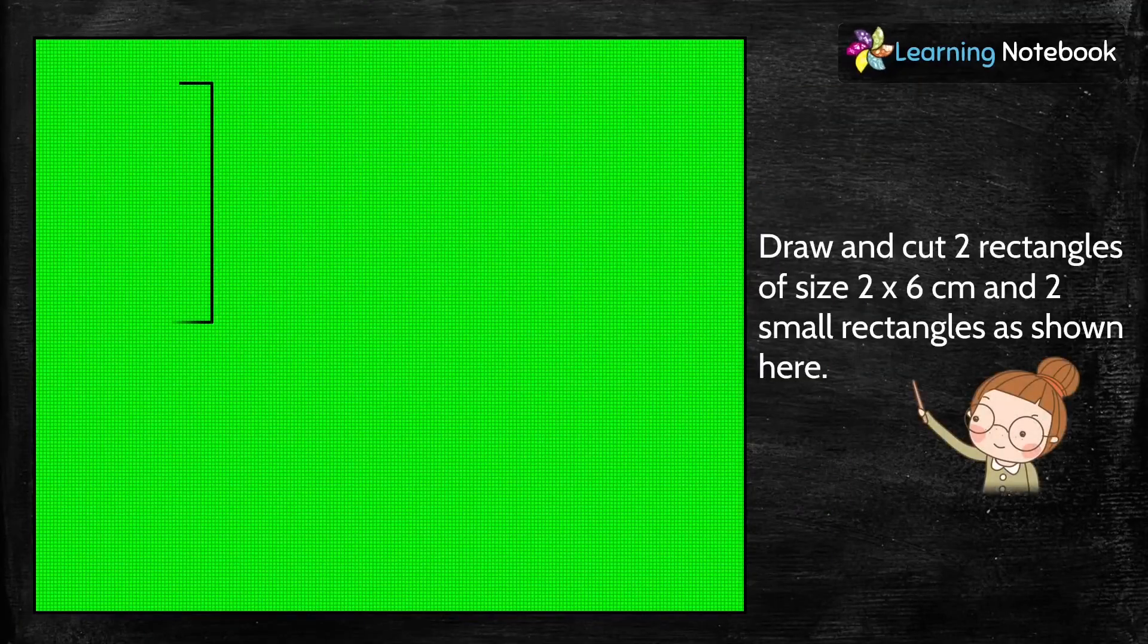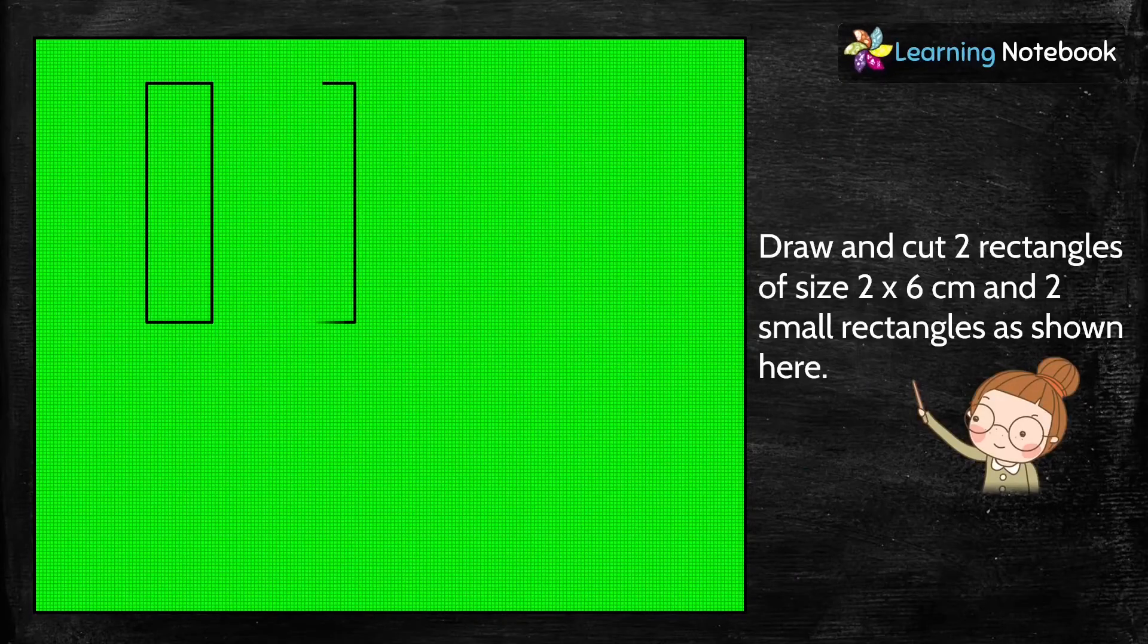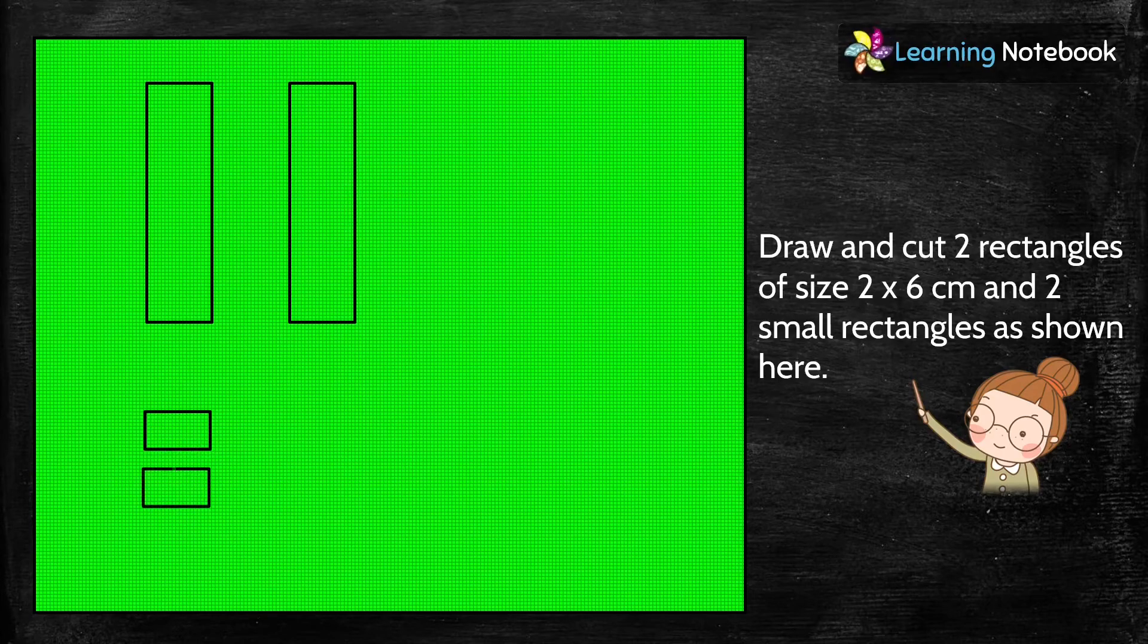Now let's take a green colored sheet and draw and cut out two rectangles of size 2 into 6 cm from it. Then cut out two small rectangles as shown here from the same sheet.